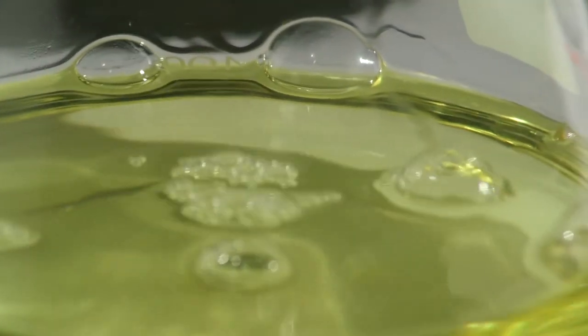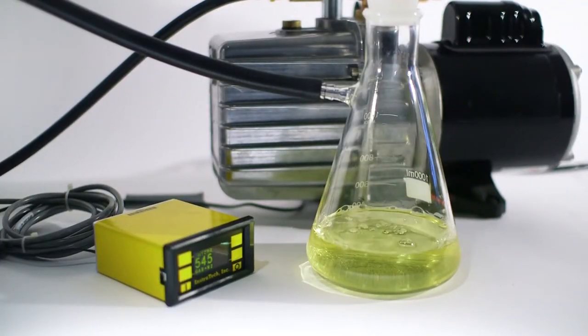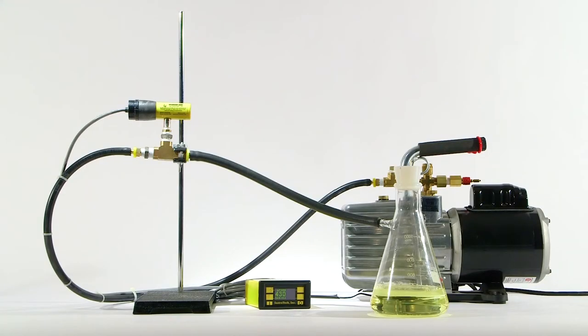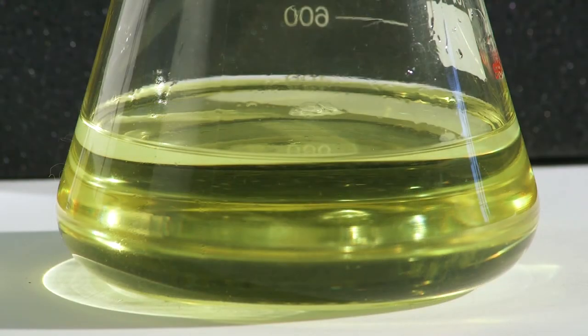These bubbles rise to the surface of the oil and burst. When the bubbles burst, the molecules go into the space above the oil and the vacuum system removes them from the flask. By the time the vacuum level reaches one torr, most of the water and gases have been removed from the oil.